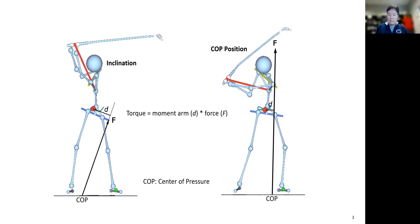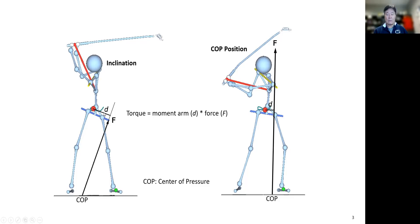I've had several questions about what player A does better than player B. We have two important issues: one is the direction of this force, because the inclination provides a long moment arm. Another issue is the position of the center of pressure.